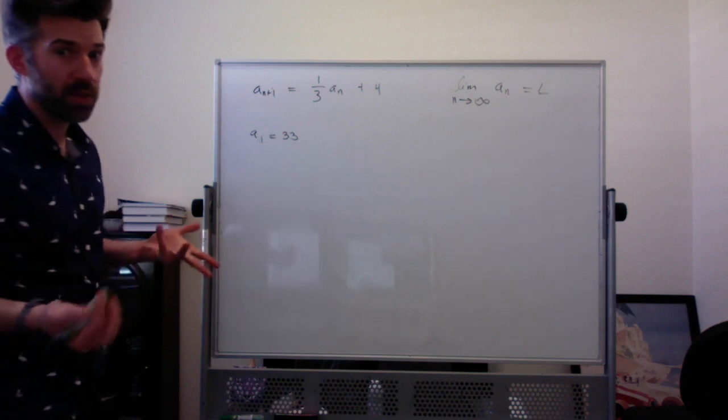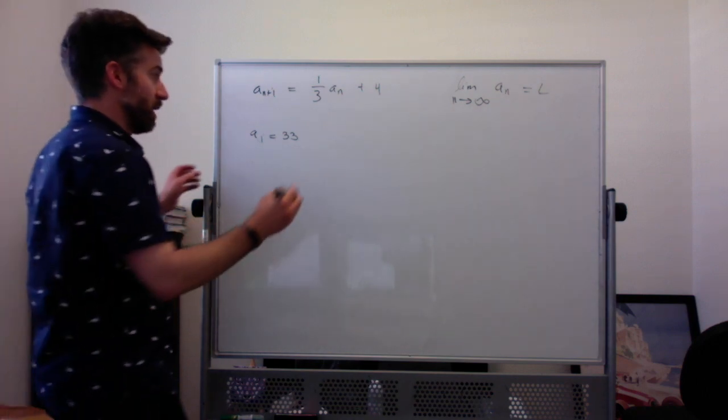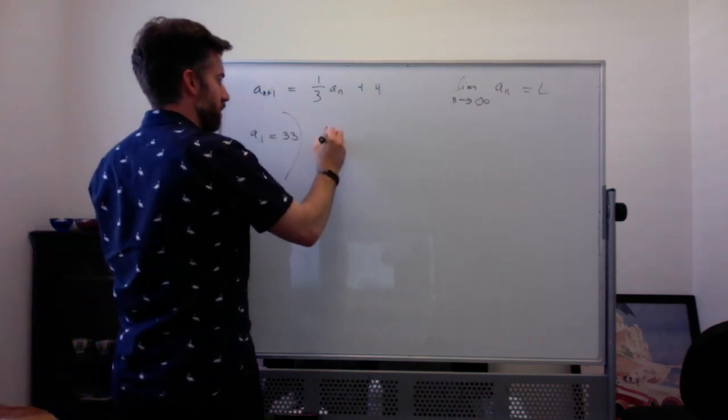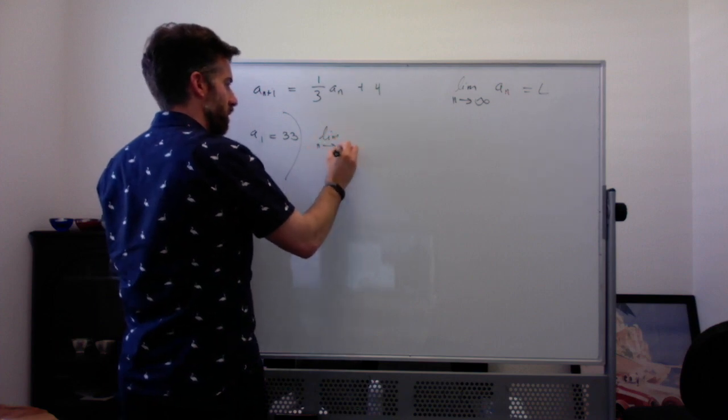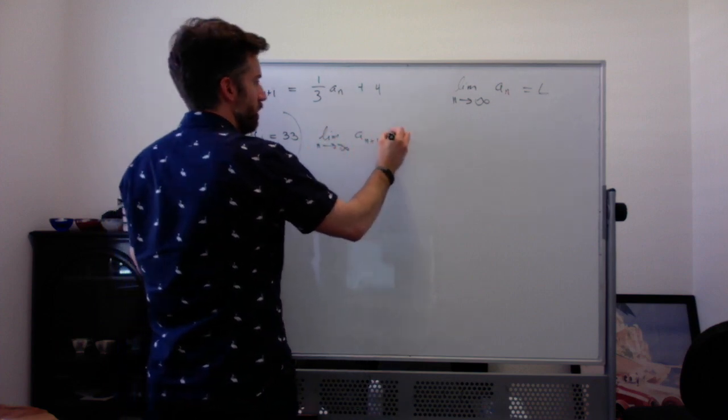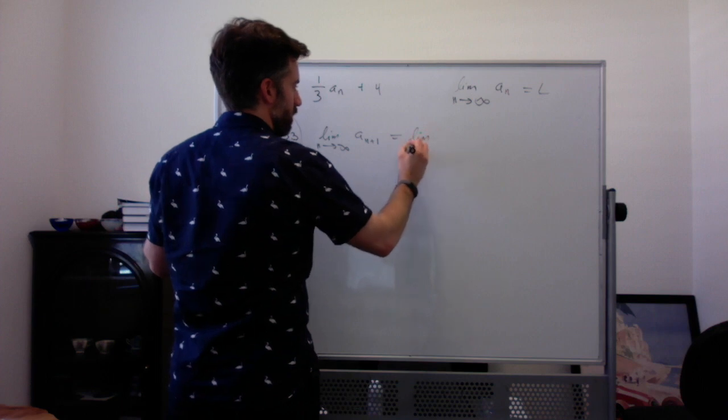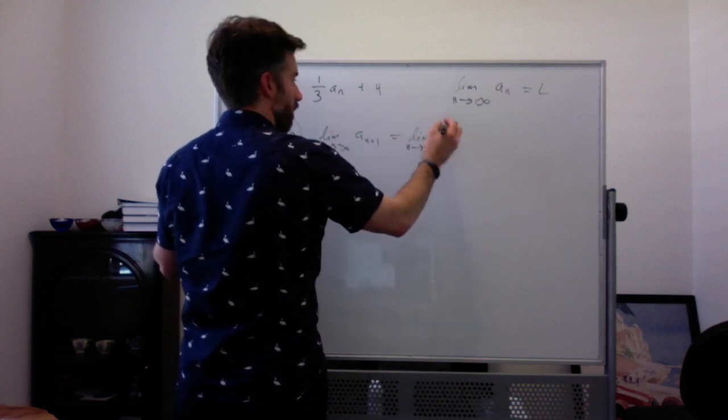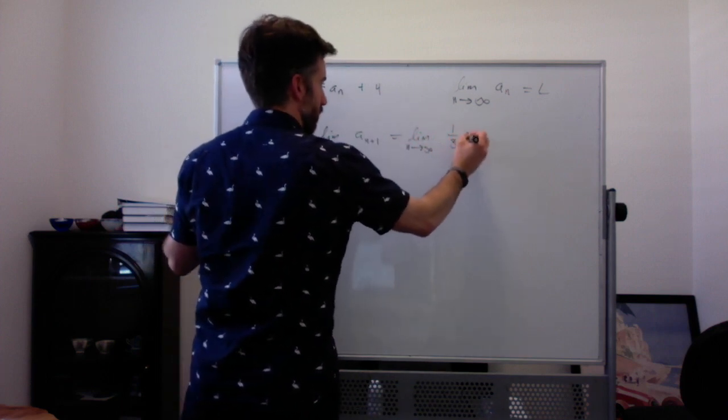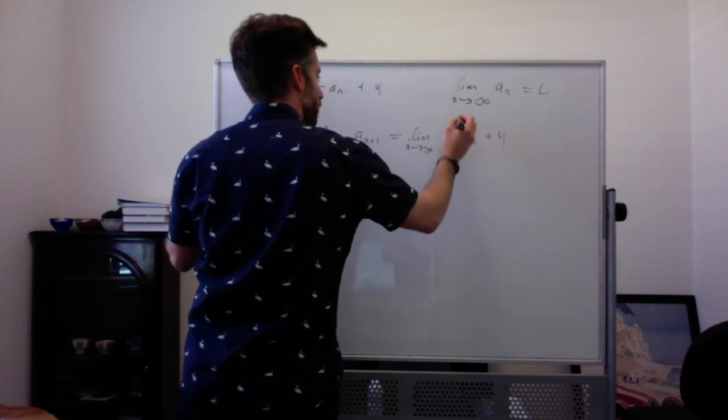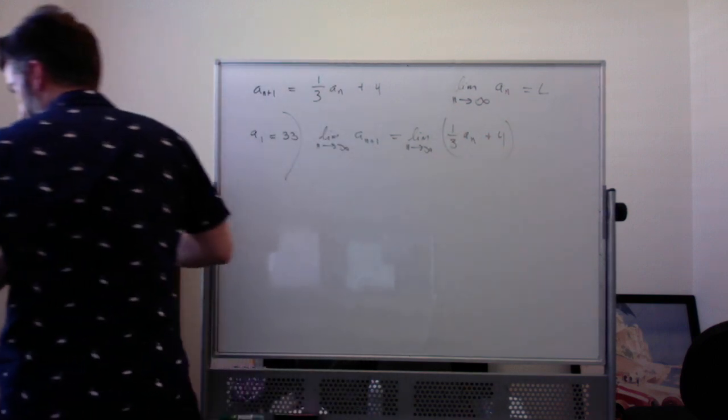Now what's really happening here is we're pretending like we're taking a limit of both sides. So if we take the limit as n goes to infinity of A sub n plus 1, it should equal the limit as n goes to infinity of all of this, 1 third A sub n plus 4.